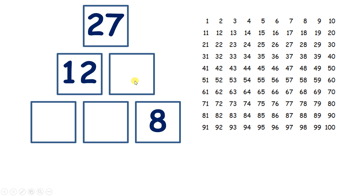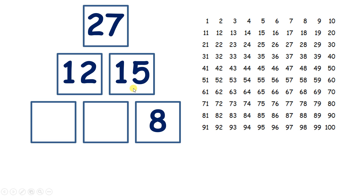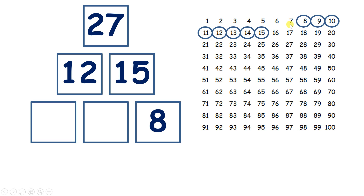So I can solve this square here by taking 12 away from 27. If we start on 27, move up to subtract 10 and count back another one, two — so we've subtracted one 10 and two units — and that leaves us on 15. Now here we have something plus eight is 15. So let's start on 15 and count back one, two, three, four, five, six, seven, eight. And that gives us seven.